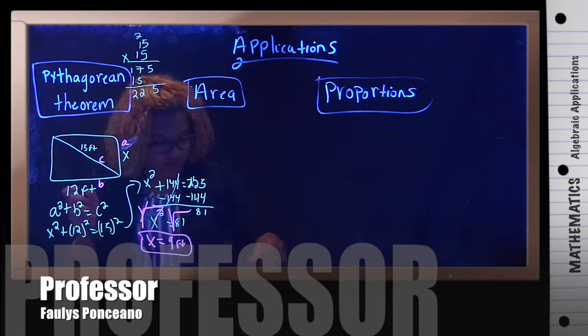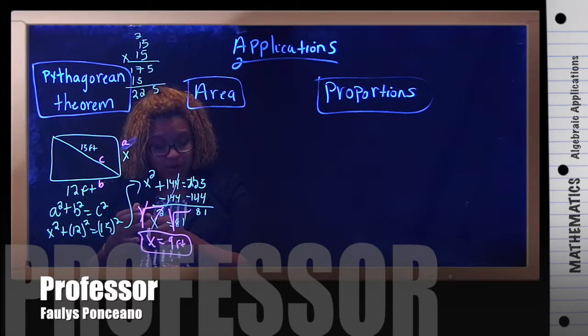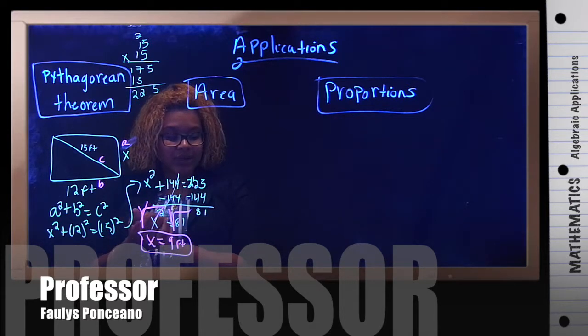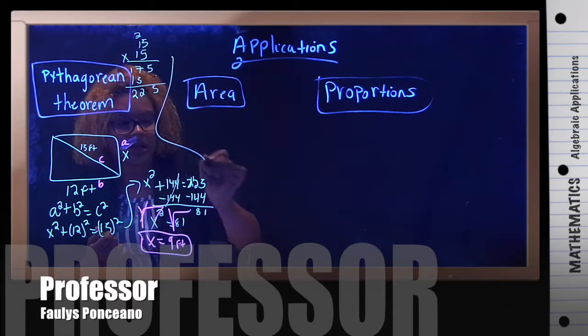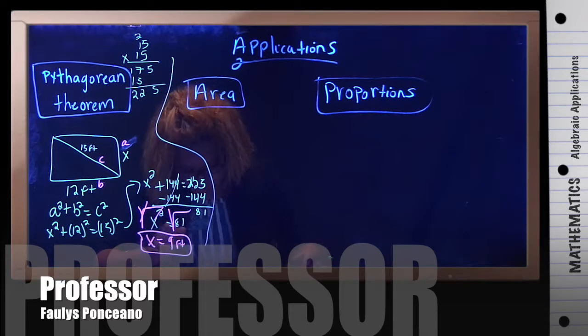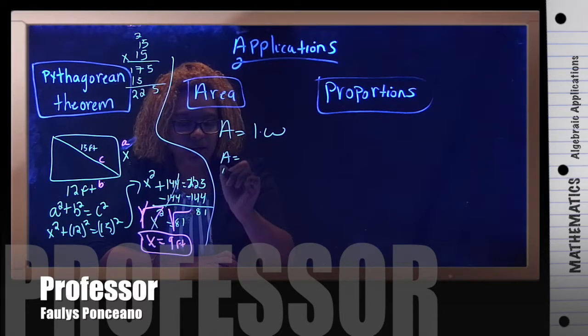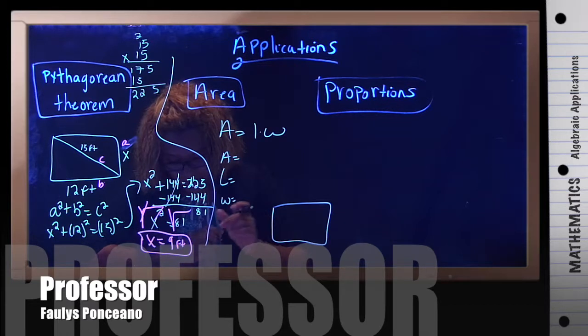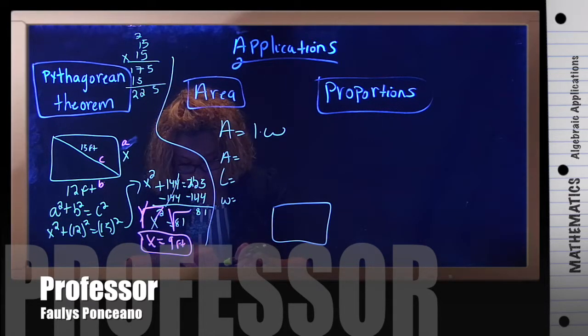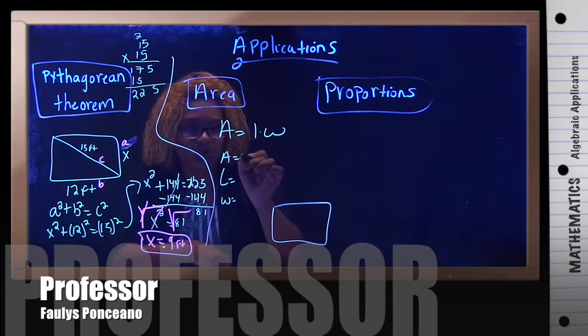And the second application talks about area. And it says, a rectangle is drawn so that the width is 4 feet shorter than the length. The area of the rectangle is 21 square feet. Find the length of the rectangle. So, I'm going to pull my line here so you don't get confused. And then I'm using area. So, my formula for area is the length times the width. So, I need to know something about the A, the L, and the width. And now I'm working with a rectangle. So, 21 feet for area.